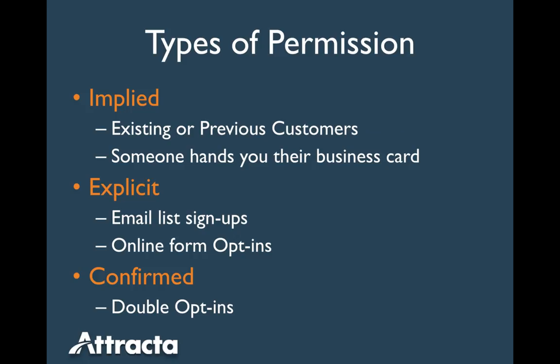Explicit permission is another type — these are people who have filled out a form to join your email list, or maybe checked a box when purchasing something, saying they wish to receive your updates. You've probably seen this: a checkbox that says 'keep me up to date' or 'allow this site to send me updates.' Then there's confirmed permission, also called double opt-in, where you send an actual email to confirm they wish to be included. These subscribers are by far the most likely to engage with your emails and patronize your business, because not only have they signed up, they've confirmed they want your messages.